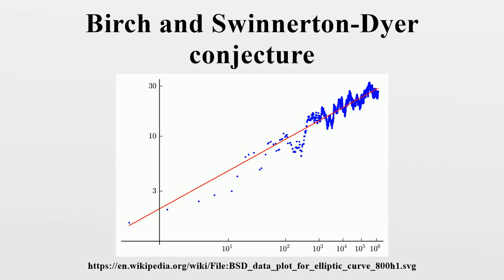This was a far-sighted conjecture for the time, given that the analytic continuation of L there was only established for curves with complex multiplication, which were also the main source of numerical examples. The conjecture was subsequently extended to include the prediction of the precise leading Taylor coefficient of the L-function at s equals 1. It is conjecturally given by a formula where the quantities on the right-hand side are invariants of the curve studied by Cassels, Tate, Shafarevich and others. These include the order of the torsion group, the order of the Tate-Shafarevich group, and the canonical heights of a basis of rational points.